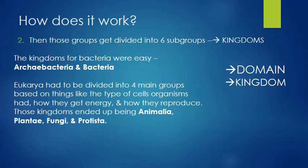So then we take those three groups and we divide those three groups into six subgroups, and those subgroups are called kingdoms. Domain is first and kingdom is second. The kingdoms for bacteria were easy - Archaea are just called Archaea bacteria, and then Bacteria, their kingdom is bacteria. Really creative.